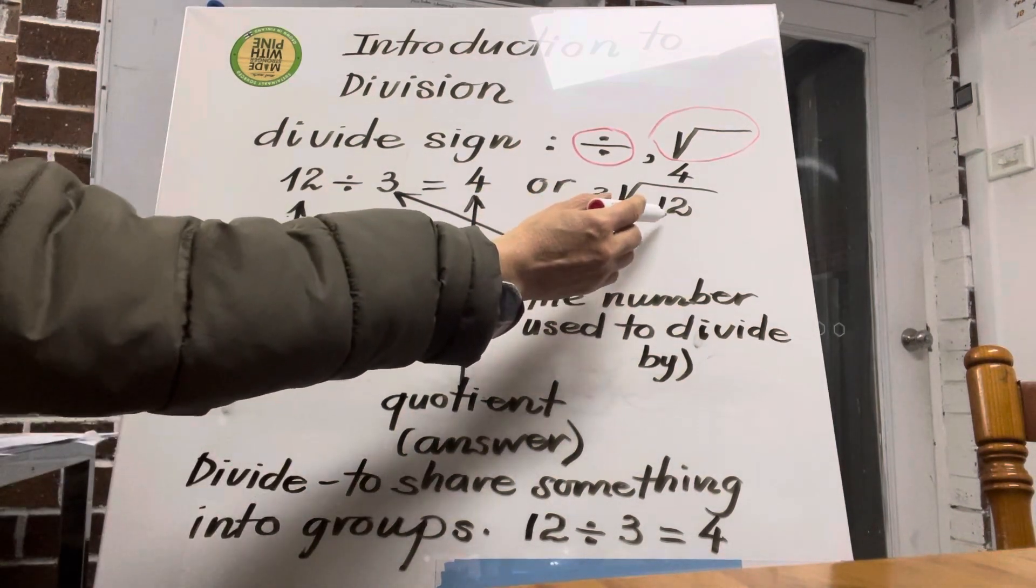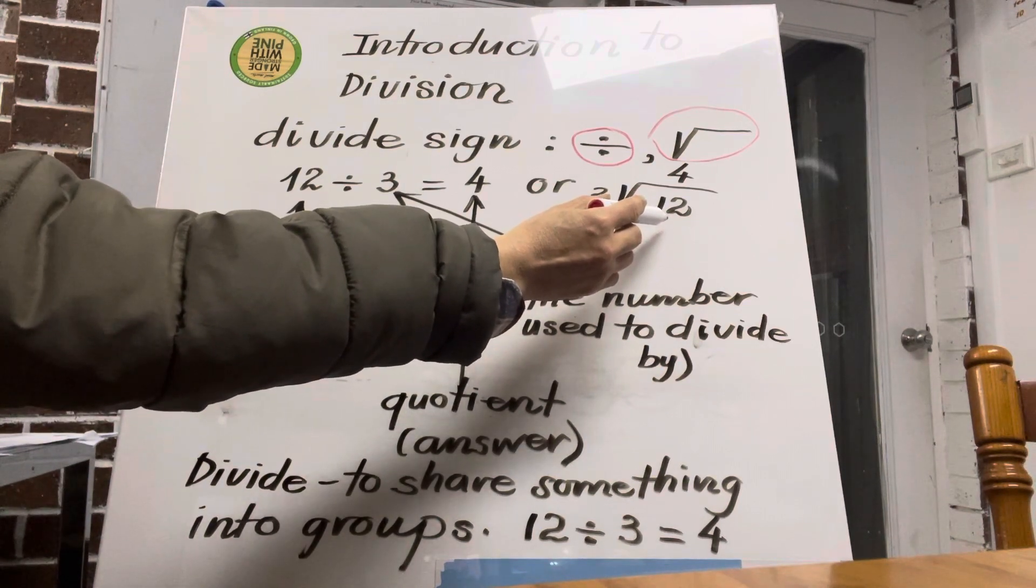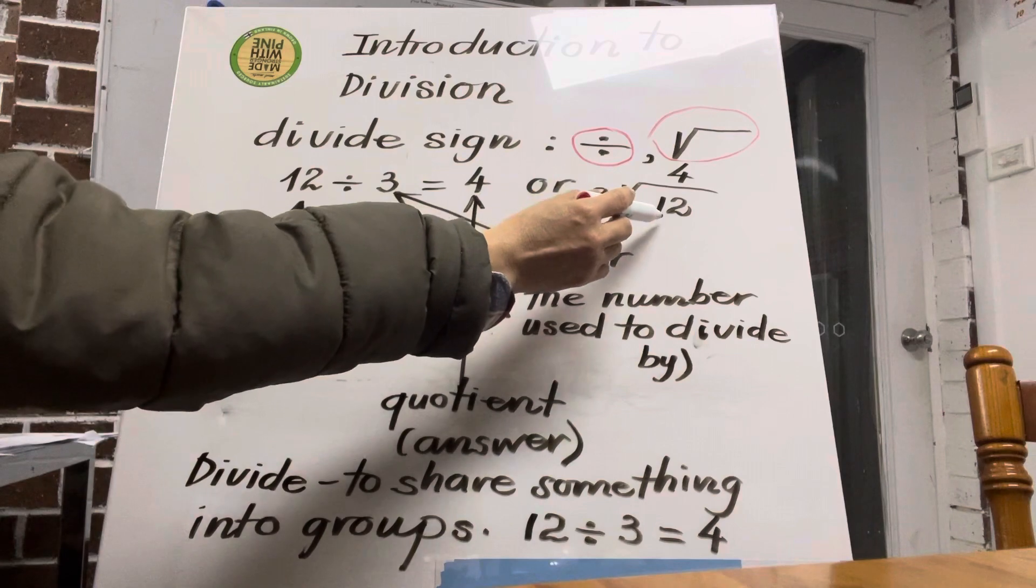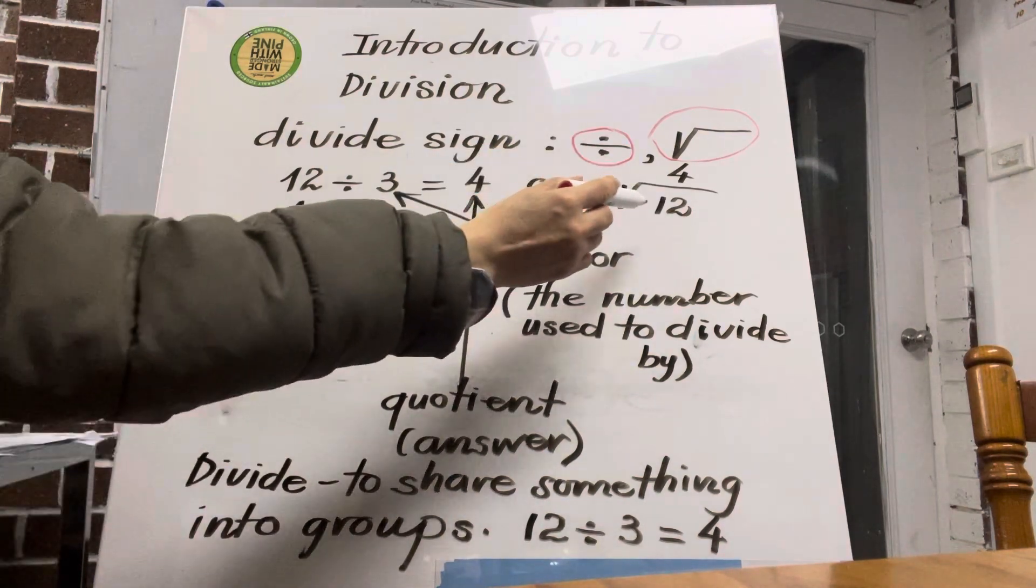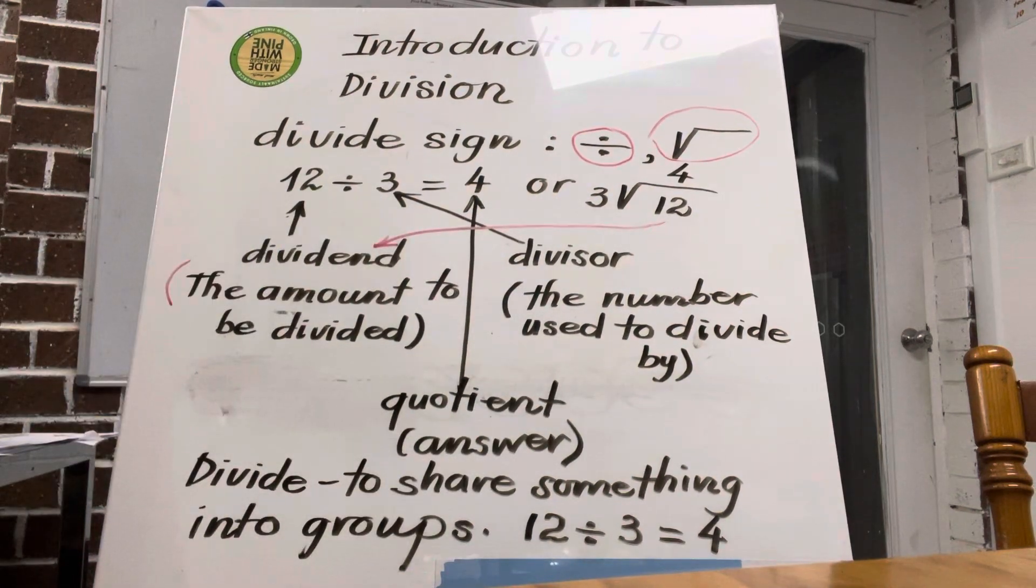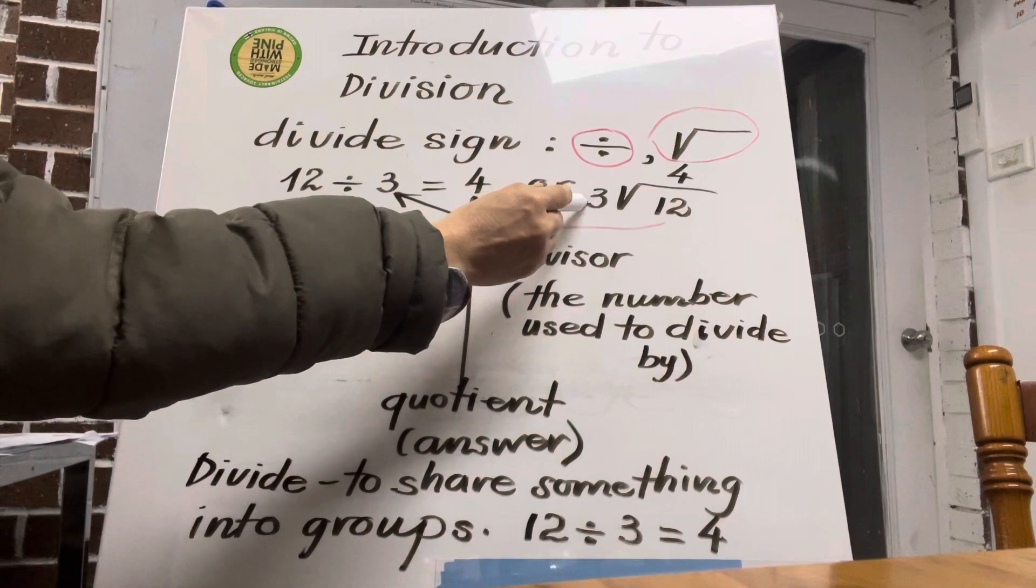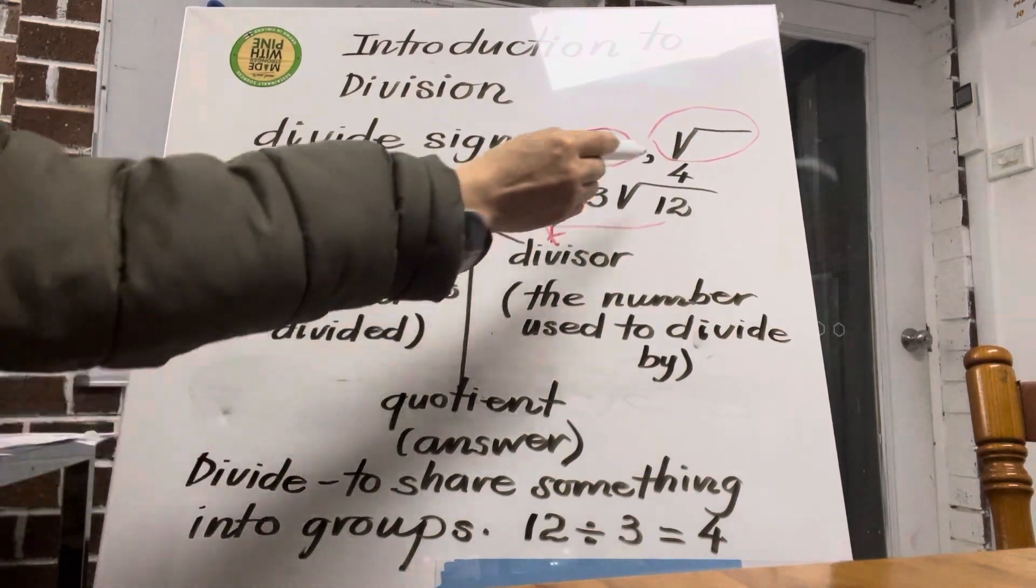Divisor, so here what do we call this? Divisor. And what is it? What do we call this one? Dividend, dividend, yes or no? You see dividend? And what do we call... divisor, divisor. And how about this one?